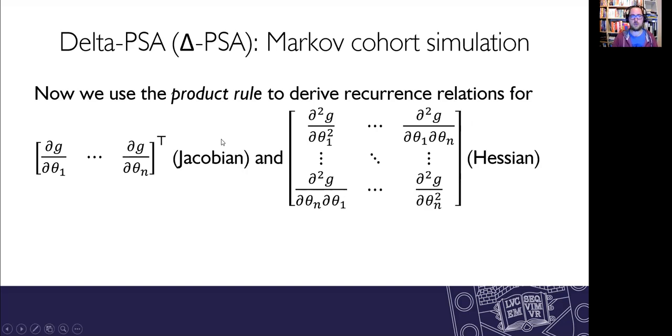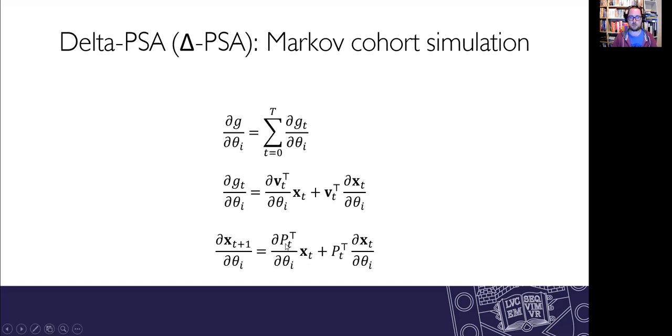Now we can use the product rule for differentiation to derive recurrence relations for that Jacobian and the Hessian matrix all the way through to the g that comes out at the end of the model. So partial g by partial theta i is just the sum of that g at each of the time cycles. Then within each cycle that g sub t is given by the partial derivative of v multiplying the state vector x plus the value vector v times the partial differential of the state vector x. So that's just the product rule when it's in matrix or vector form.